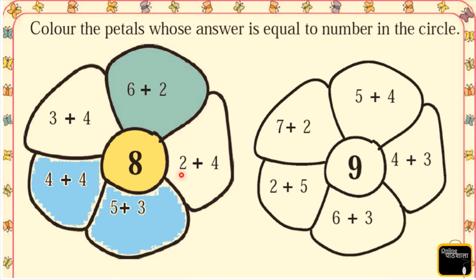In this class we have the last petal and we can see 2 plus 4. What is 2 plus 4? Yes, 2 plus 4 is 6. Is that equal to 8? No. It means we are not going to color this petal.